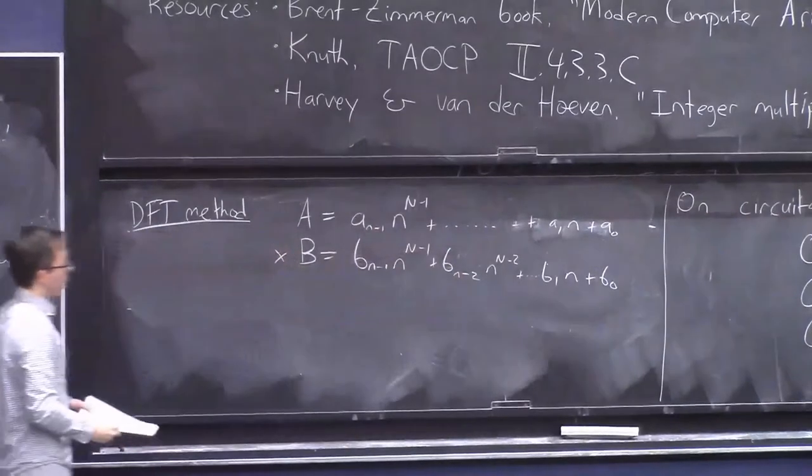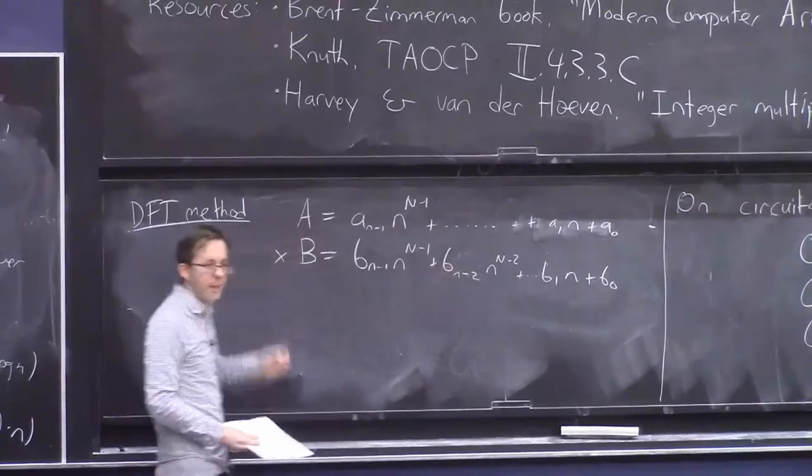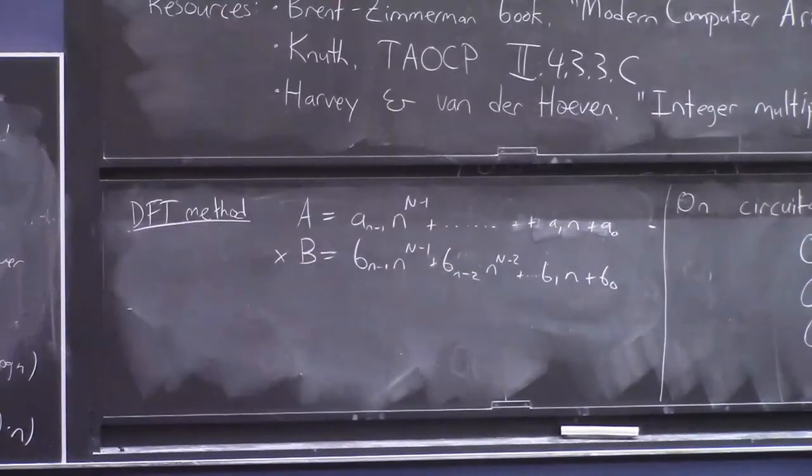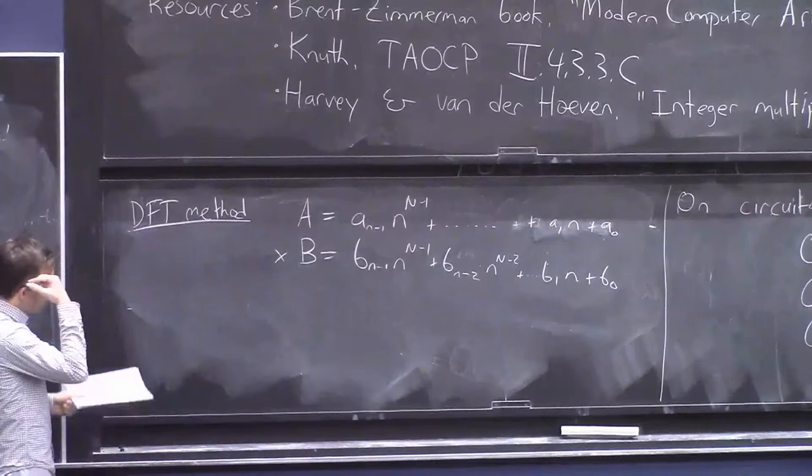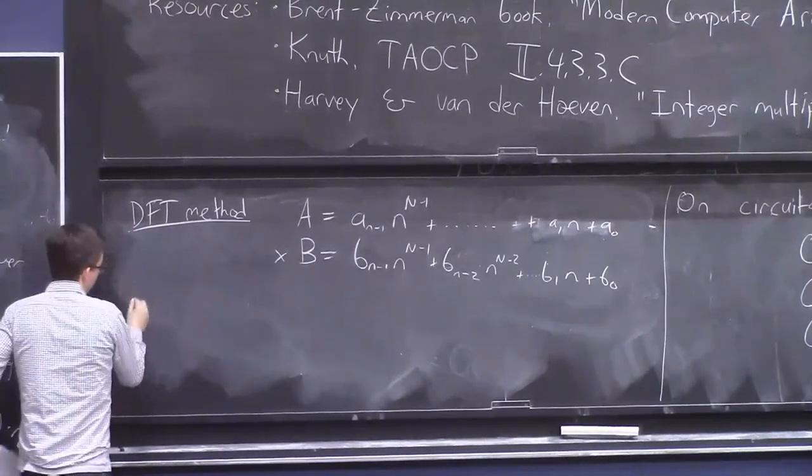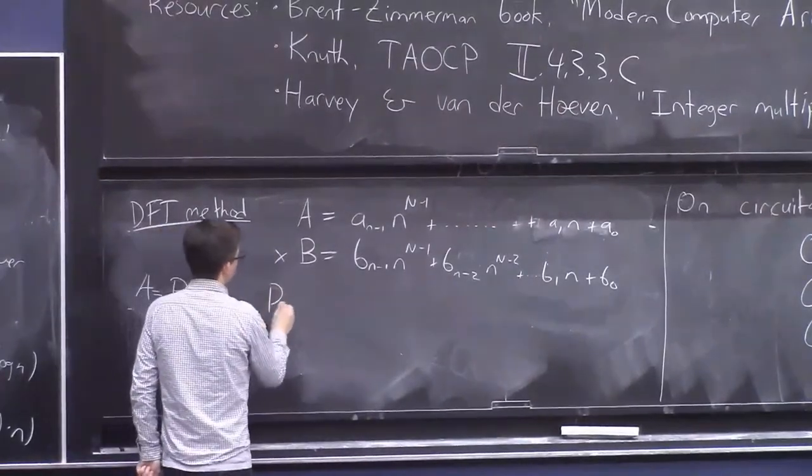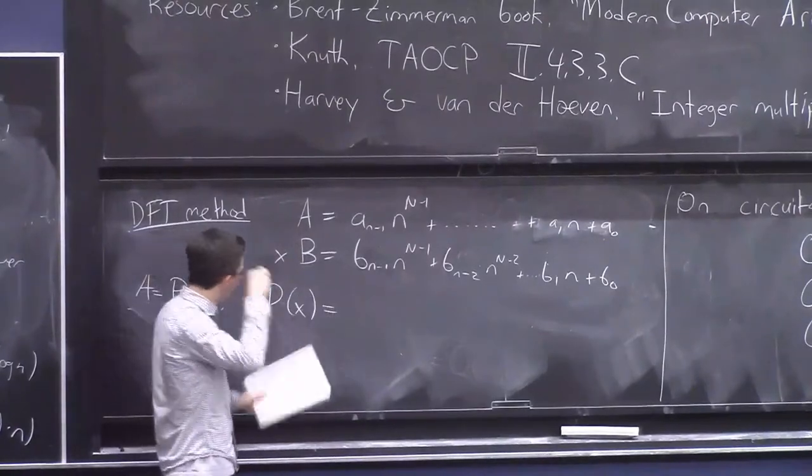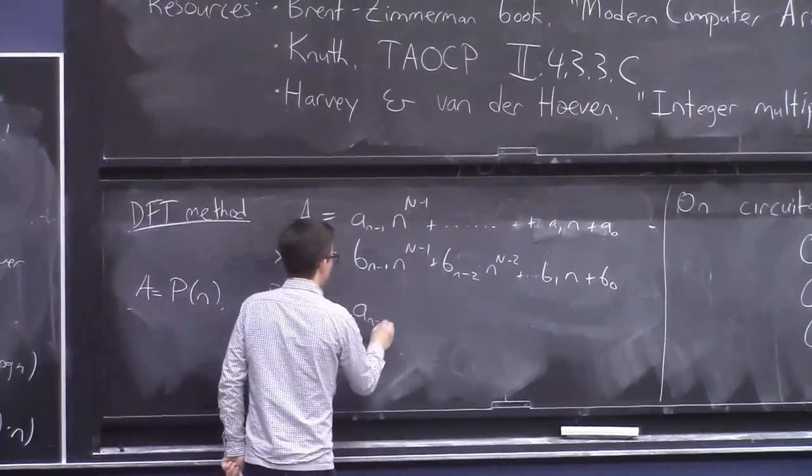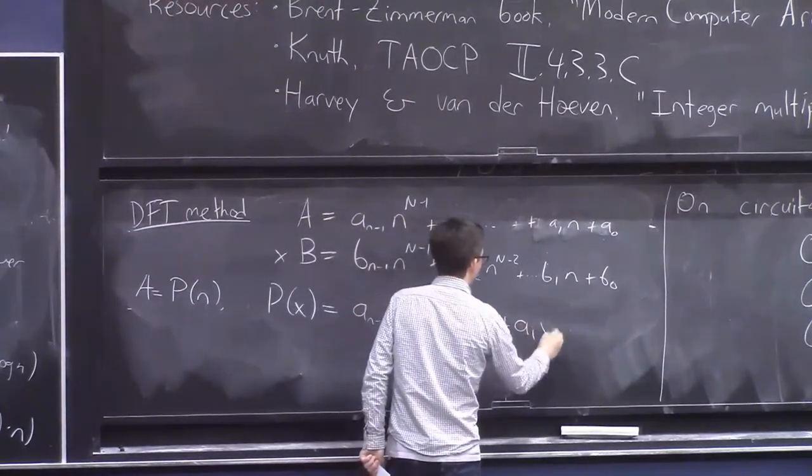That's what two generic numbers in base little n with capital N many digits look like. The little a's and the little b's are the digits. And we want to compute the product of these as numbers. And you can see it really looks as though we're multiplying two polynomials. So in fact, A is equal to P of n, where P is the polynomial, the formal polynomial, in an indeterminate x with integer coefficients.